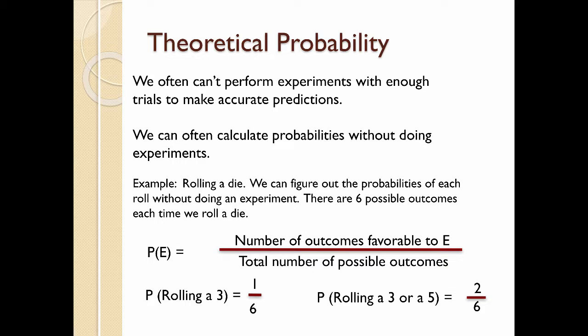For example, in rolling a die, we really don't have to do an experiment. We can figure out the probabilities of each roll. So we know, we look at our die and we can see there are six possible outcomes each time we roll a die. So the probability of an event is the number of outcomes favorable to the event that we're looking at, divided by the total number of possible outcomes. Well, there are six possible outcomes. And if I am looking at the probability of rolling a 3, there's only one outcome that is favorable to rolling a 3, because there's only one 3 on the die. Now, if I've defined my event as rolling a 3 or a 5, so I'm satisfied if either one of those comes up, then I have a 2 out of 6 probability of that event happening.